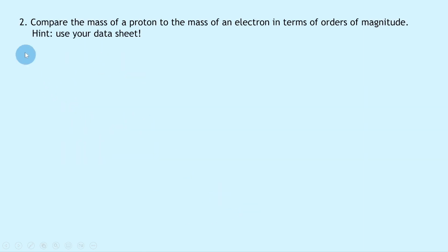Lastly, question two says to compare the mass of a proton to the mass of an electron in terms of orders of magnitude. A hint here is that you can use your data sheet. Now these are more like the kind of questions you're going to get on orders of magnitude in the exam.